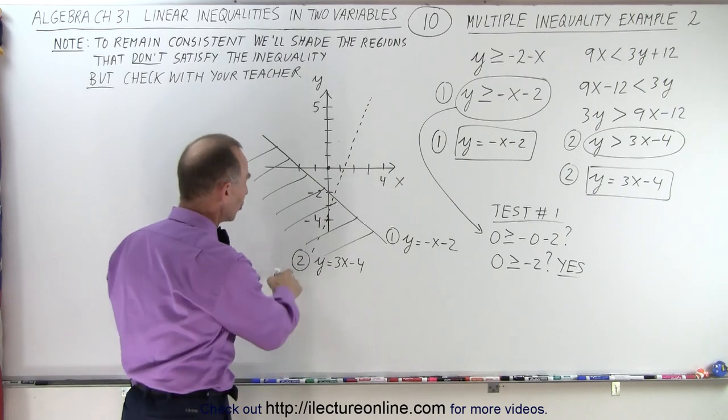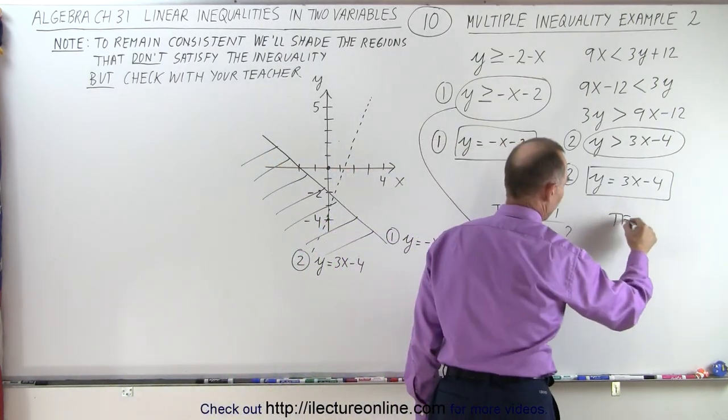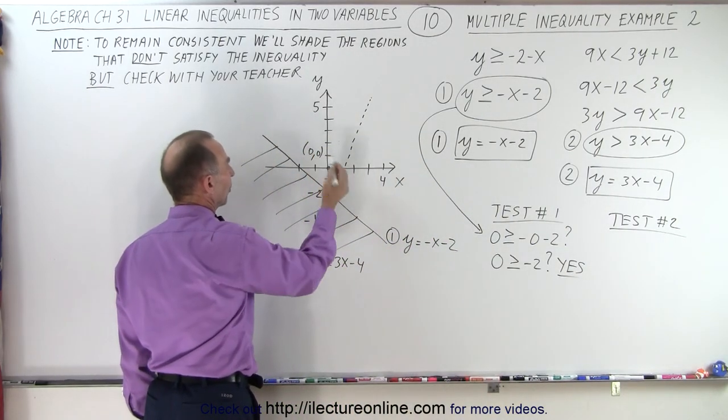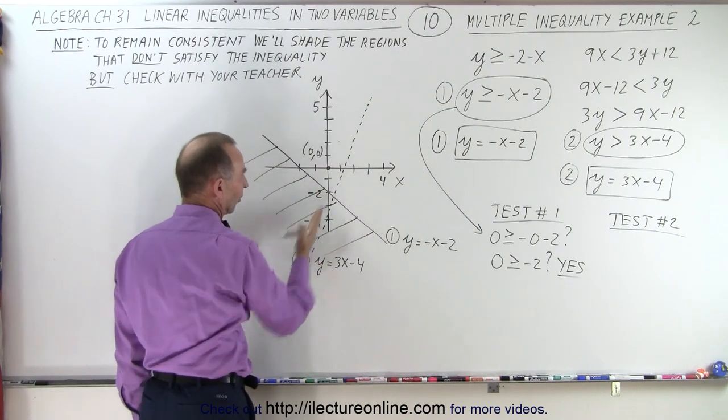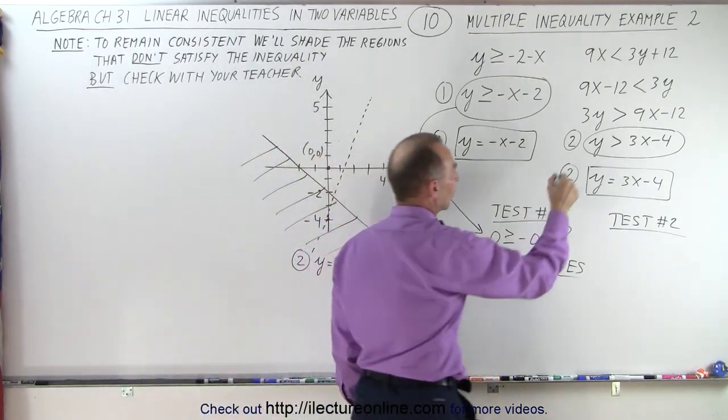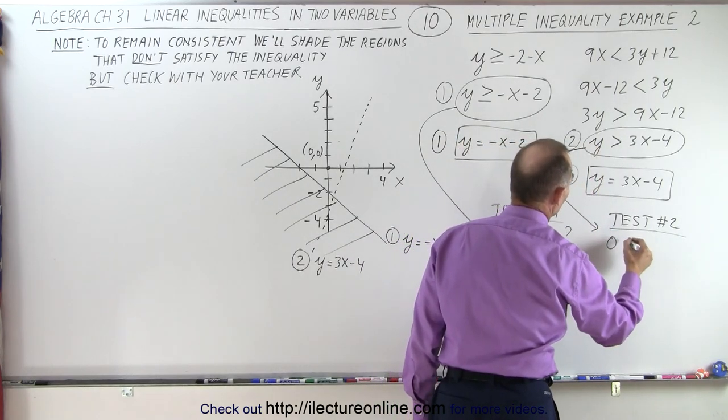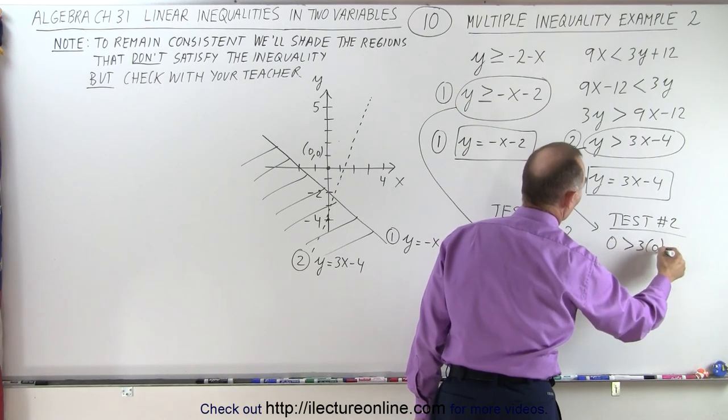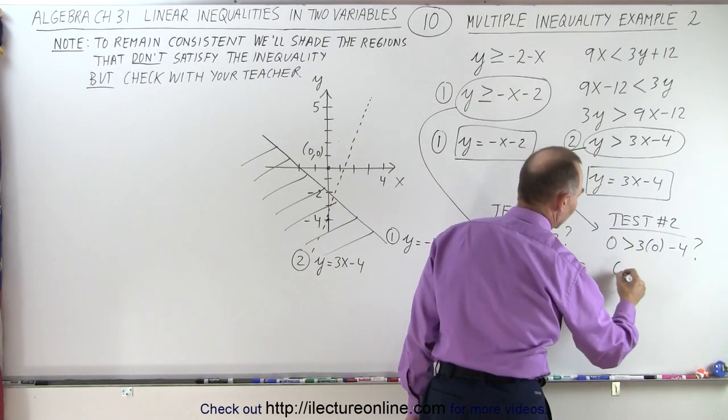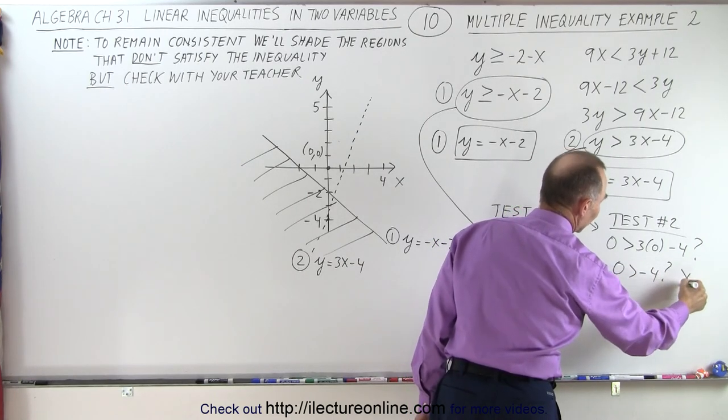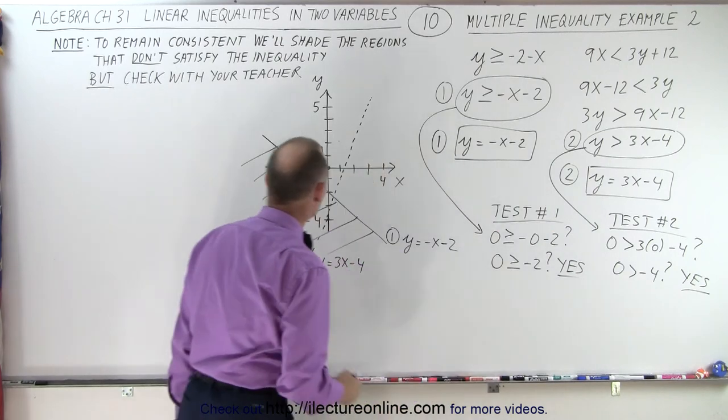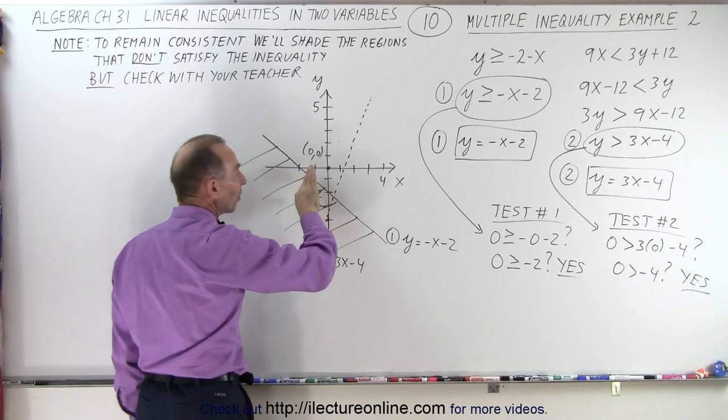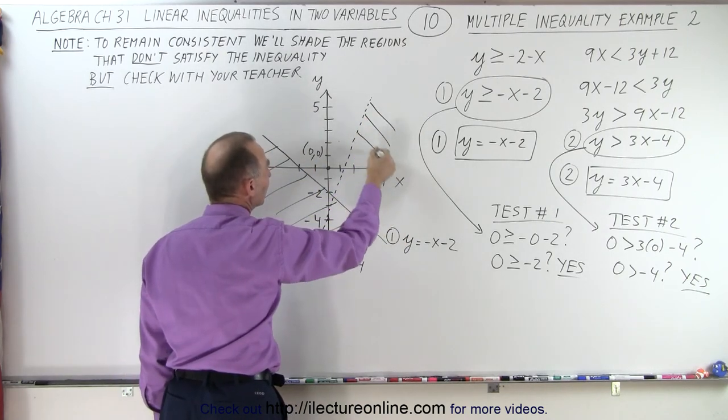Now we take line number 2, and we're going to do test number 2. Again, we're going to pick a point, pick this point right here again. The point (0, 0) is a good point to the left; that's the region to the left of this vertical dash line. We're going to take the inequality, so we have 0 is not equal to but greater than 3 × 0 - 4, question mark. So we have 0 > -4, and the answer is yes, 0 is greater than -4. So relative to the dashed line, I picked the test point that does satisfy the inequality, which means the other side doesn't. That means I'm going to shade away the other side.